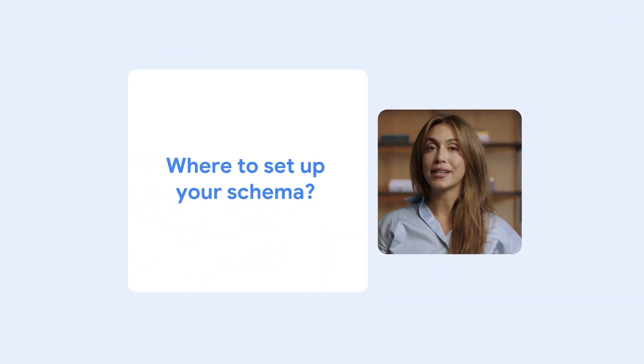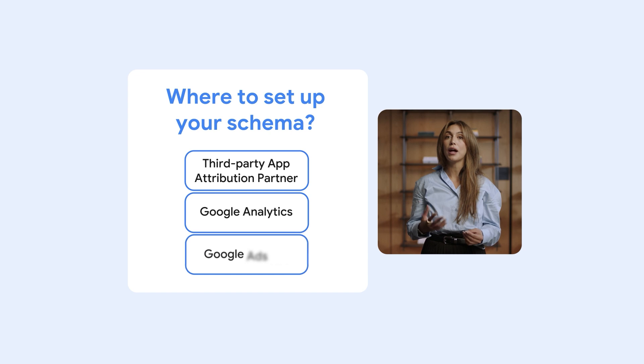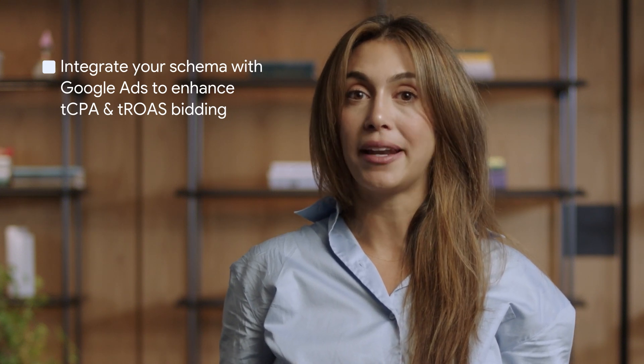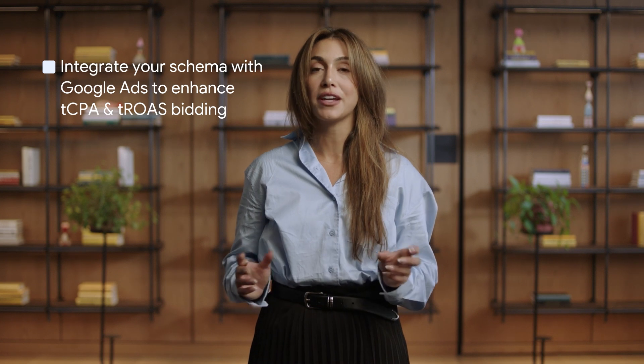After you've chosen your conversion values and events based on your business, you'll now need to determine where to set up your conversion value schema. If you aren't already working with a supported third-party app attribution partner on your SCAN schema strategy, you can also set up your schema through Google Analytics or the Google Ads API directly. Advertisers should only choose one place to set up their conversion value schema. We are also excited to share that you can integrate your SCAN schema events with your Google Ads account in order to enhance the performance of TCPA and TROAS bidding in your iOS app campaigns. This SCAN event integration is available in beta. If you are using a supported third-party app attribution partner but bid to Google Analytics app events, we have launched a mapping feature in the Google Ads interface to support the mapping of event names between Google Analytics and app attribution partners.